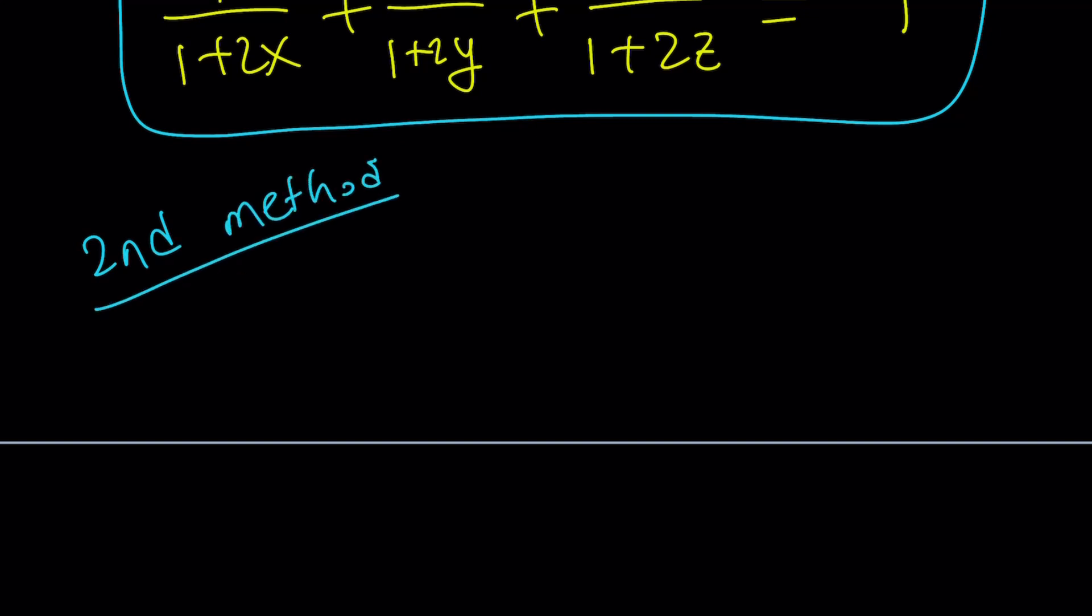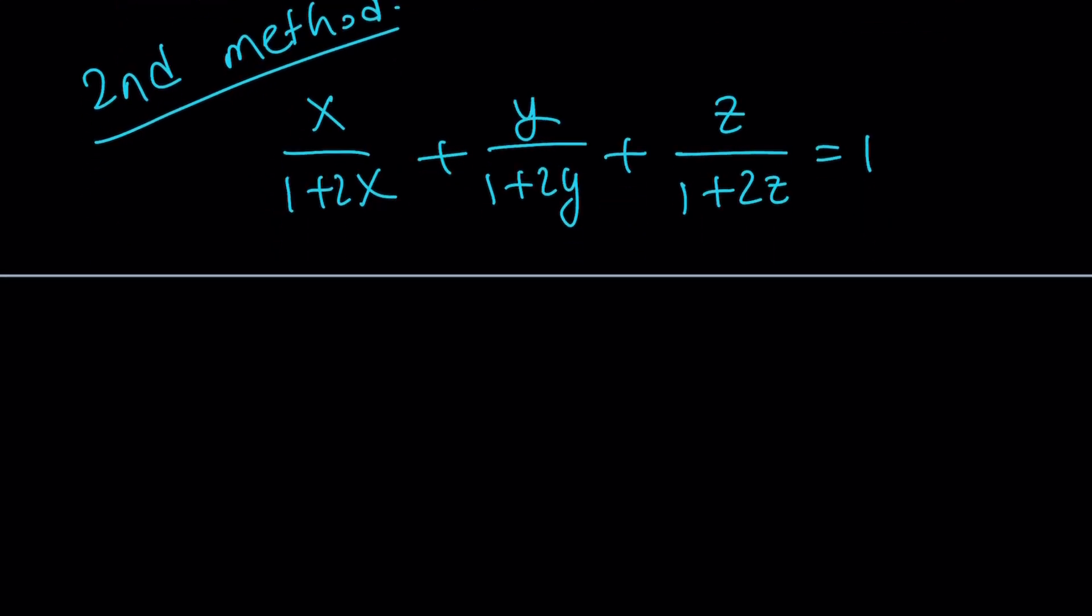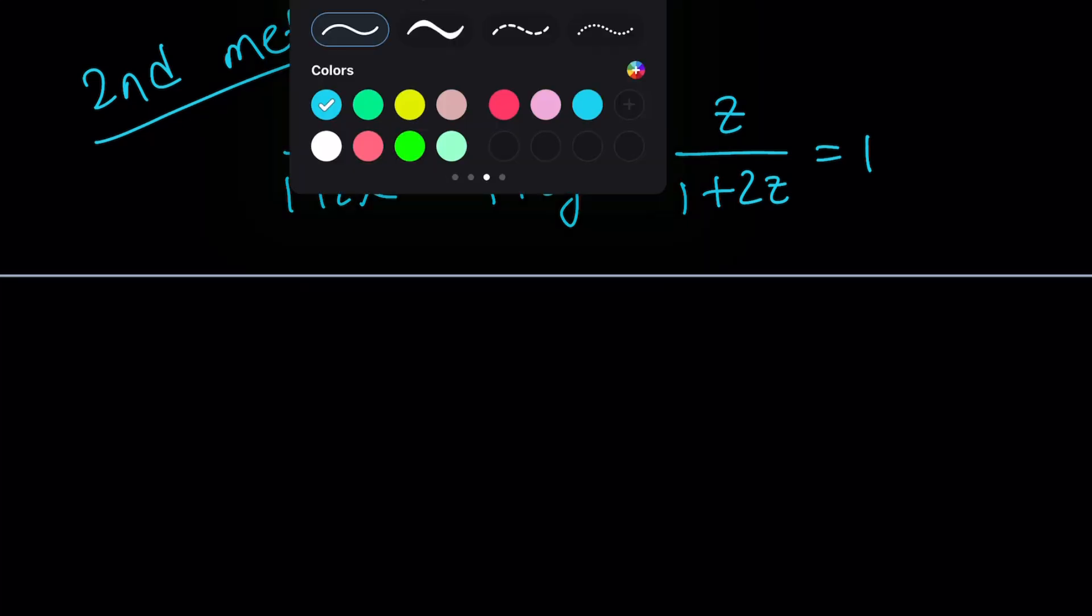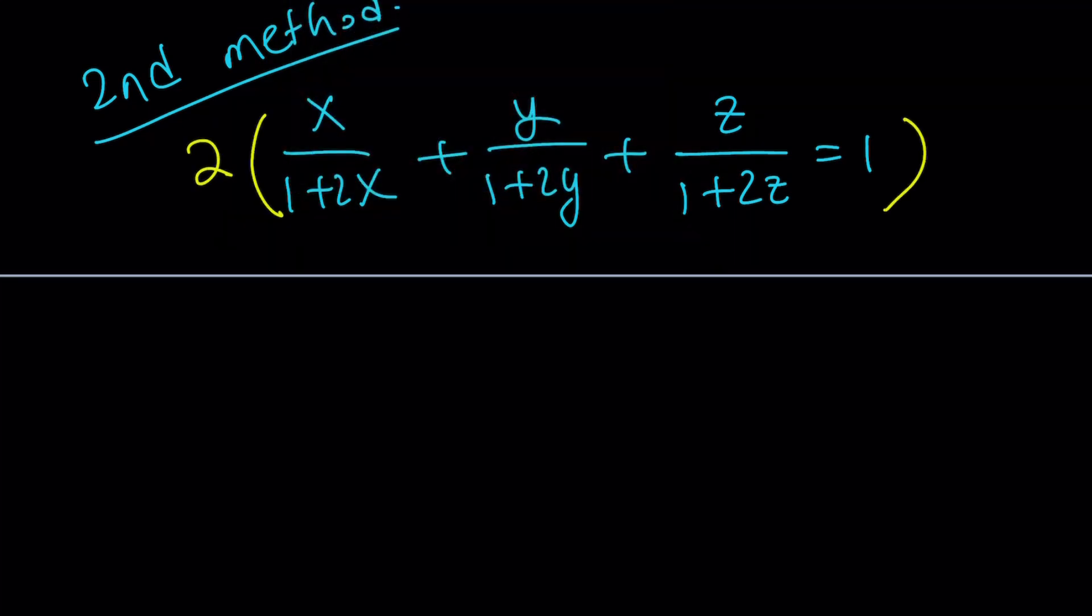So, let's talk about the second method. You already know the answer, right? But, let's go ahead and take a look at another approach. So, I have x over 1 plus 2x. I gave it away. Okay, never mind. Forget everything you've seen. So, I have x over 1 plus 2x. Hocus pocus, abracadabra. Alright. So, we know that this is equal to 1. And, we're supposed to evaluate the same thing with 1 being in the numerators. So, here's what I'm going to do. I'm going to multiply both sides by 2. And, that is the secret sauce.